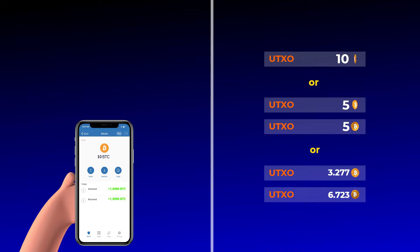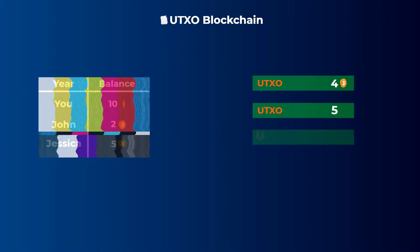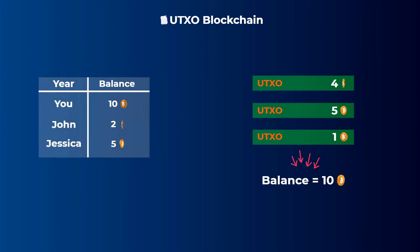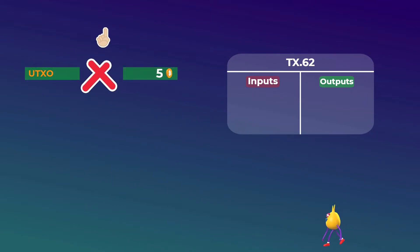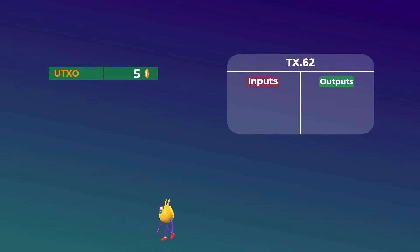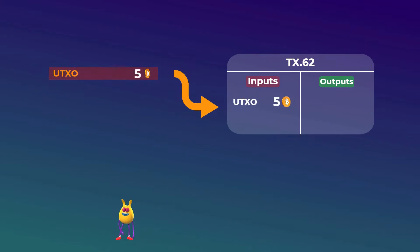It all depends on the transactions you make with other users. There is no balance for you or any other user stored on the Bitcoin blockchain — your wallet shows you the balance by adding up the unspent outputs you own. A very important thing to note is that each UTXO can be used or spent one time only, in one transaction. Once it is used, it is considered a spent output and cannot be used again. That means you can't use just half a UTXO and use the other half in another transaction. So what if you have one UTXO for five bitcoins and you want to send just two bitcoins to John?